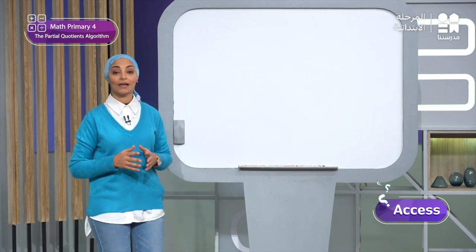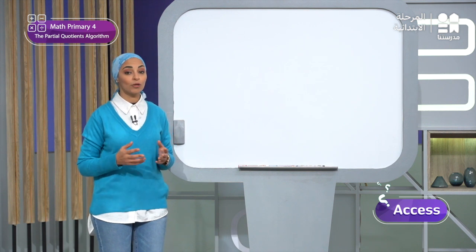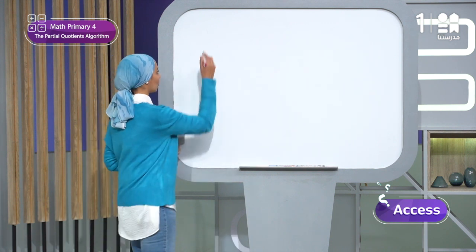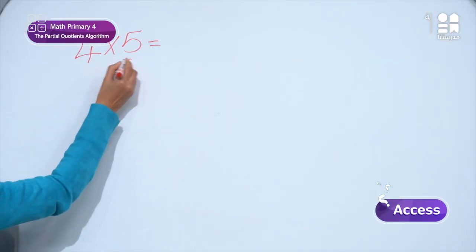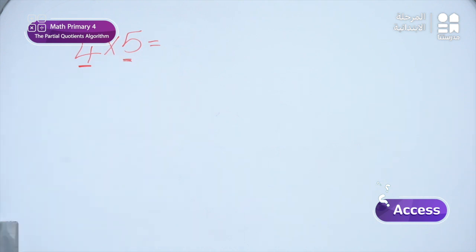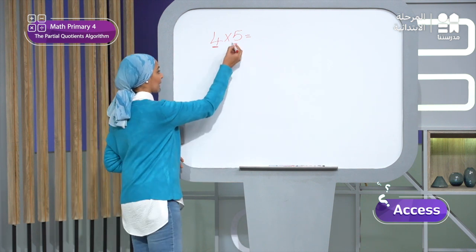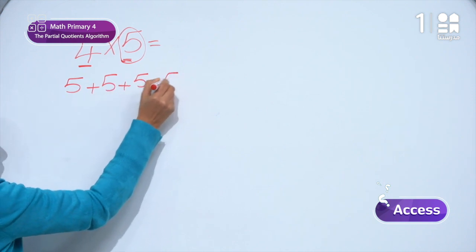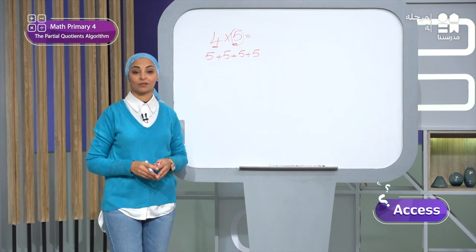Multiplication as repeated addition means that 4 times 5 means 5 repeated 4 times, so I can write 5 plus 5 plus 5 plus 5. In a division problem like 42 divided by 6, I can use repeated subtraction to solve it. I will subtract 6 from 42 repeatedly: 42 minus 6 equals 36, minus 6 equals 30, minus 6 equals 24, minus 6 equals 18, minus 6 equals 12, minus 6 equals 6, minus 6 equals 0.